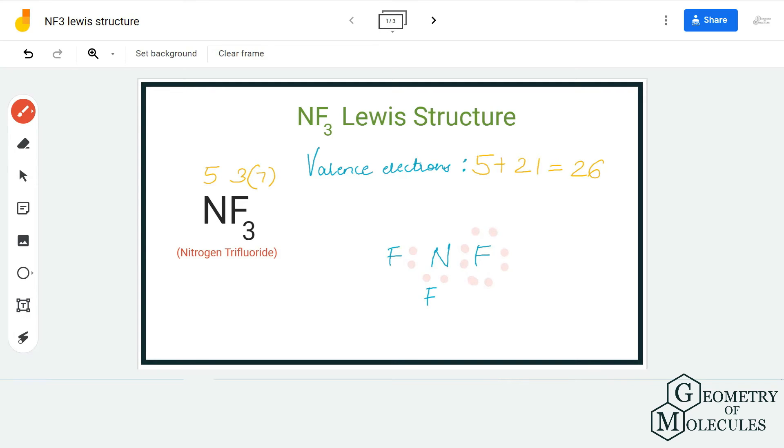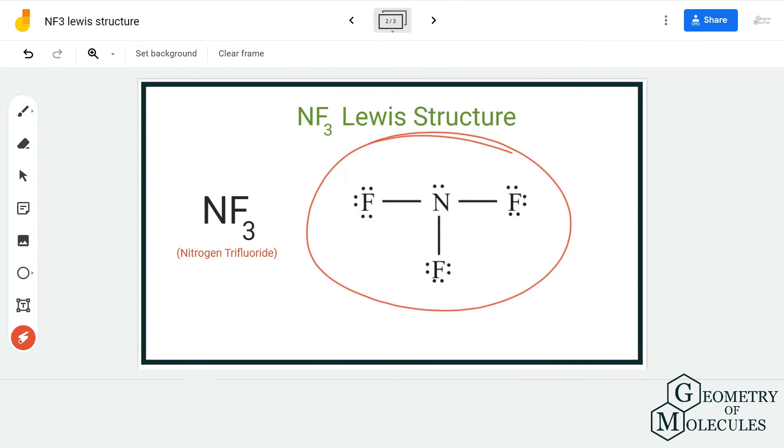I am going to place six valence electrons around each fluorine atom so that each fluorine atom can have eight valence electrons in its outer shell. Now we are just left with two more valence electrons to complete this valence electron number, so I am going to place this pair of electrons on nitrogen atom.